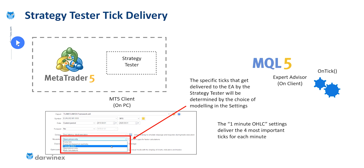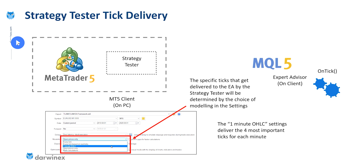The strategy tester effectively replicates the delivery of ticks as your expert would receive them from live market conditions, but only those four are delivered in this particular order: the open, which is then processed by your OnTick function, followed by the low and the high, and then finally the close is delivered to your OnTick function.